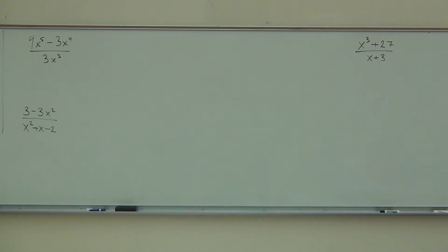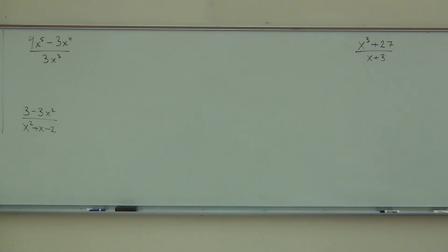In each case, we're trying to factor the numerator and the denominator completely — that's very important. You're going to try to factor so that the term with the largest exponent is positive. If it's already positive, great, you don't need to factor out a negative. But if it's not, then you're going to want to factor out a negative. That's the whole idea here.